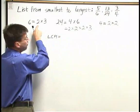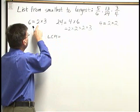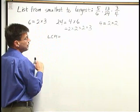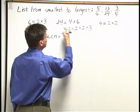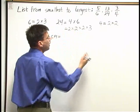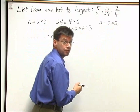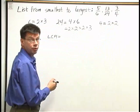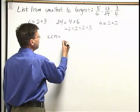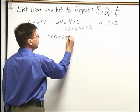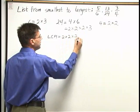I have 1 factor of 2 in my prime factors of 6. I have 3 2s in my prime factors of 24. And I have 2 2s in my prime factors of 4. The most number of 2s that I see is 3 right here in the 24. So I'm going to use those 3 2s for my LCM.